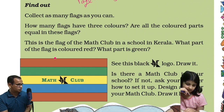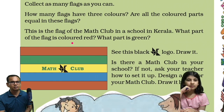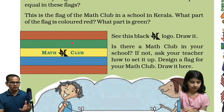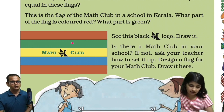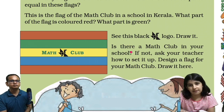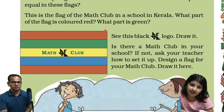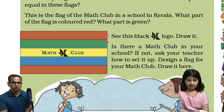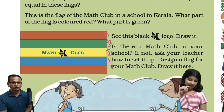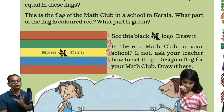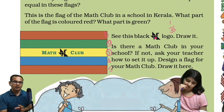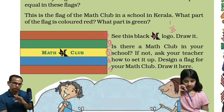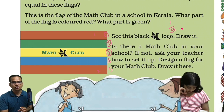This is the flag of the math club in a school in Kerala. What part of the flag is colored red and what part is green? Red is two by five. Correct — two by five red. This flag is divided into five equal parts: one, two, three, four, five. So each part is one by five. Since red color is in two parts, the red portion is two by five.